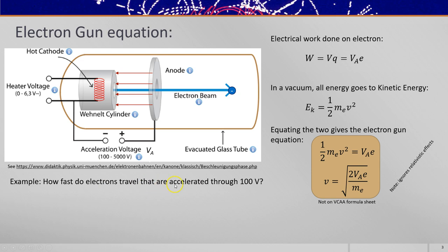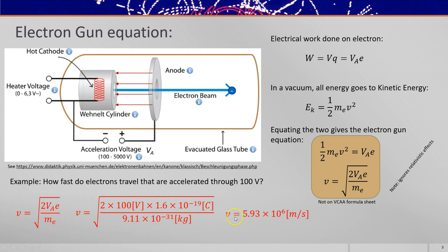How fast then would electrons travel if they were accelerated through 100 volts? Well we can use this formula and say it's 2 times 100 volts, the charge on the electron divided by the mass of the electron, gives you nearly 6 times 10 to the 6 meters per second. That's quite significant but it's slow enough that relativistic effects haven't yet become important.